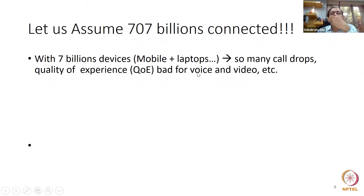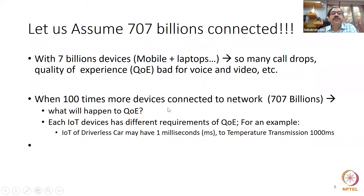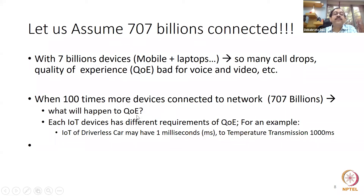Quality of experience is bad for voice and video. When doing a video call outside or on cellular networks, you don't get the quality you want. When watching cricket, the ball bowled at 130 km/h is sometimes not visible on the internet — bad quality of experience. In 7 billion, if you make it 707 billion — 100 times more devices — what will happen to quality of experience? Pretty bad. And each IoT device needs different quality of experience.